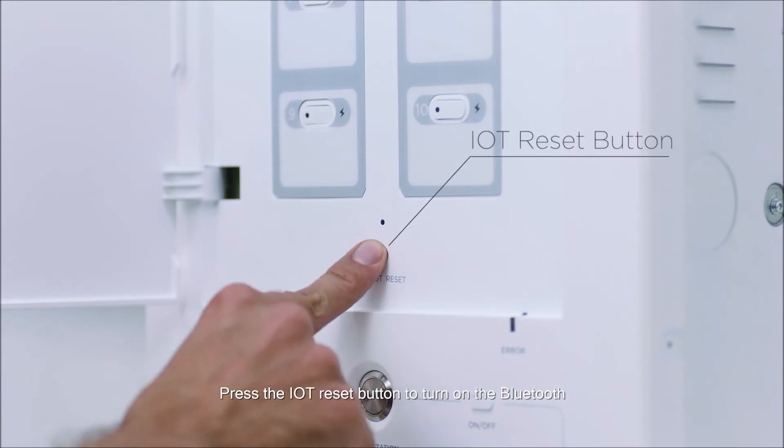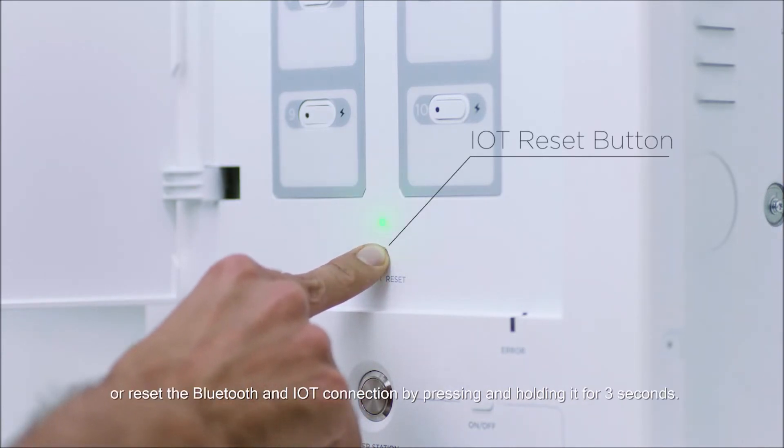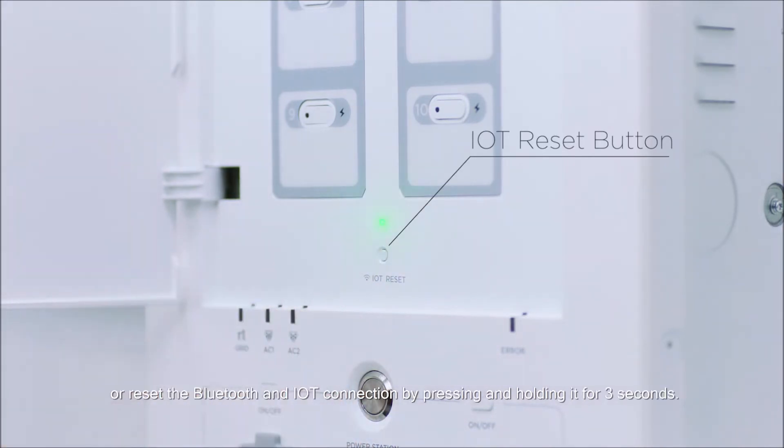Press the IoT reset button to turn on the Bluetooth, or reset the Bluetooth and IoT connection by pressing and holding it for three seconds.